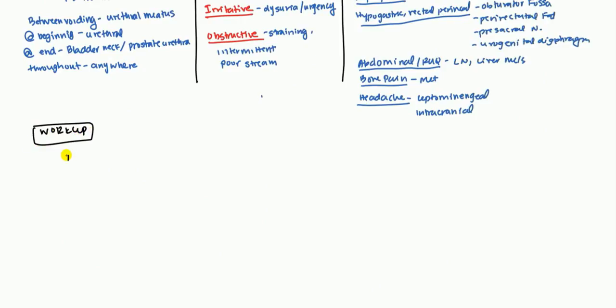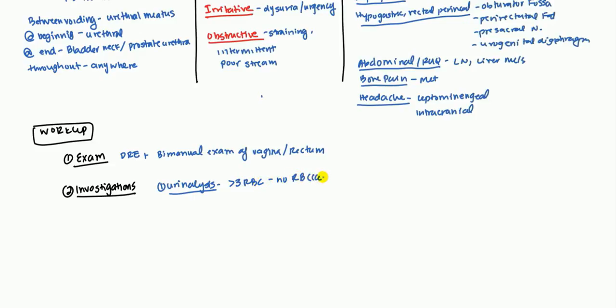Next, we'll talk about how you would work up a patient. First, you'd want to start with an exam. This would be a digital rectal exam on a male, or a bimanual exam of the vagina and rectum of a female. After that, you want to probably do some investigations. The first investigation you want to do is urine analysis. And what you're primarily looking for is the hematuria. So they should have more than three RBC per high power field. Now, what this can also do is you can try to rule out maybe some glomerular cause or anything like that. So in order to continue to maintain that this is bladder cancer, there should be no RBC cast or acanthocytes. And acanthocytes are just abnormal red blood cells. So if you see any of those two, then it kind of rules out bladder cancer as the cause of the hematuria.